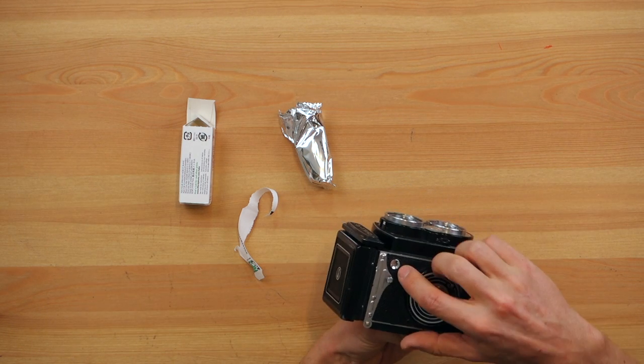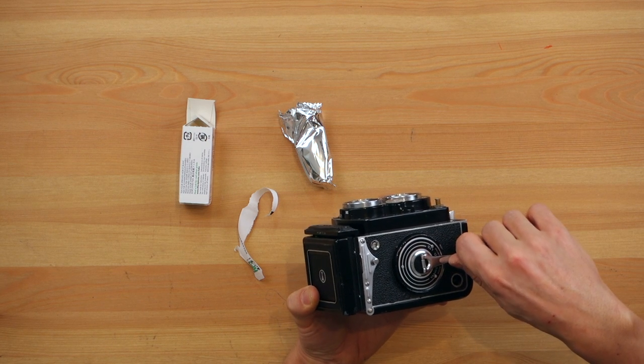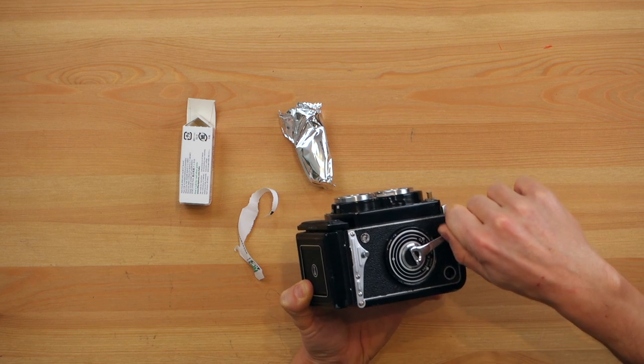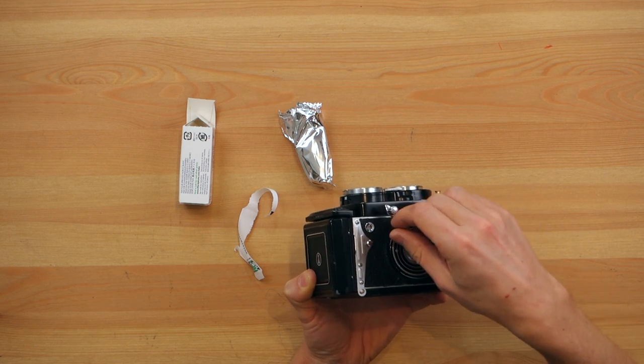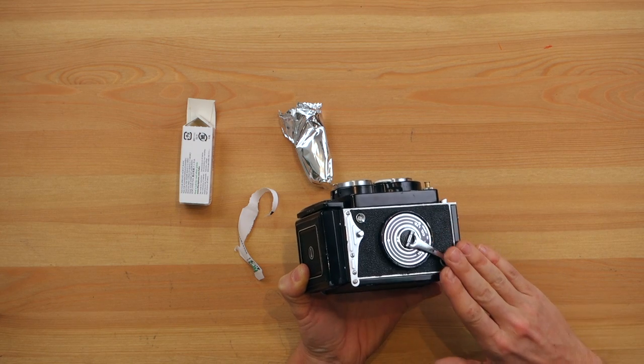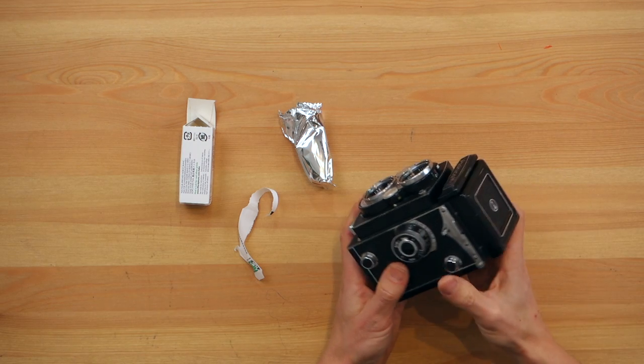But we still have to advance to the first frame. Here's a frame counter and this is the rewind crank. So now we just turn it until it stops on its own. Once it stops, we turn it anti-clockwise, put it back into this little hole which just keeps it nice and flat. Now we're ready to shoot.